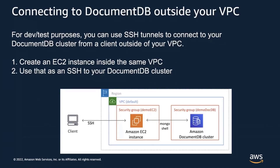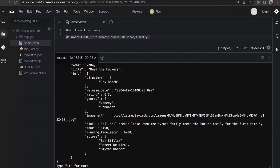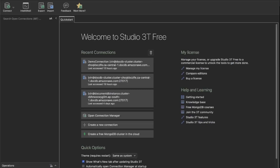To connect to your DocumentDB cluster from outside of your VPC, you'll need to create an EC2 instance that acts as an SSH tunnel. Inside a region, you have a VPC where your Amazon DocumentDB cluster is located. To connect from outside this VPC, you SSH into the Amazon EC2 instance, which acts as a tunnel to reach your Amazon DocumentDB cluster. Let's go ahead and see what this looks like from a client perspective using Studio 3T.